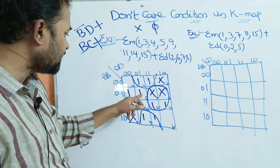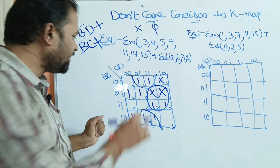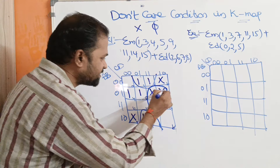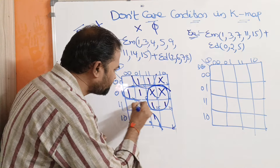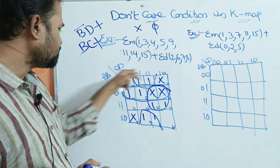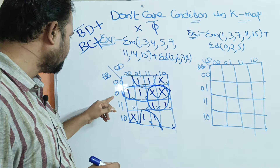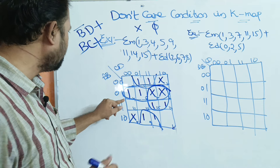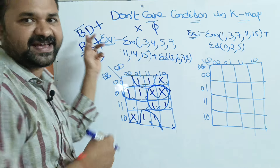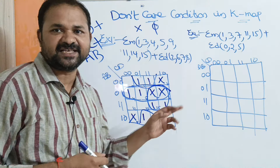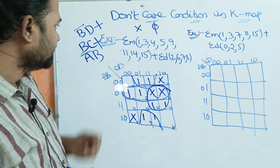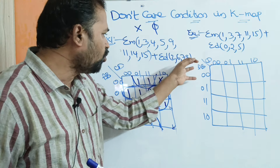Next, we have to cover the remaining 2 ones. We can combine these 2 ones with these 2 don't cares to make 4 cells as one group. Here, the CD values are changing so there is no need to consider CD. Looking at AB: 0,1 means A-bar B. So the simplified expression for this problem is B-bar D + BC + A-bar B.